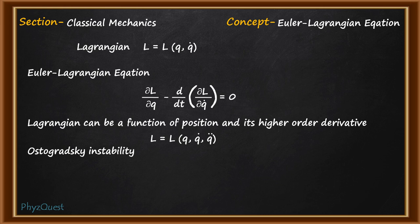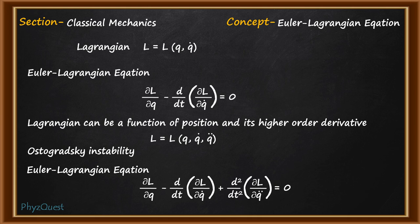So when we have higher order term in the Lagrangian the corresponding Euler Lagrangian equation will also change and the equation will be modified to ∂L/∂q - d/dt(∂L/∂q̇) + d²/dt²(∂L/∂q̈) = 0.